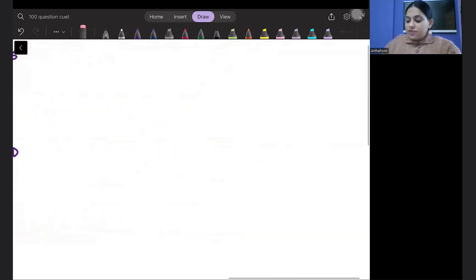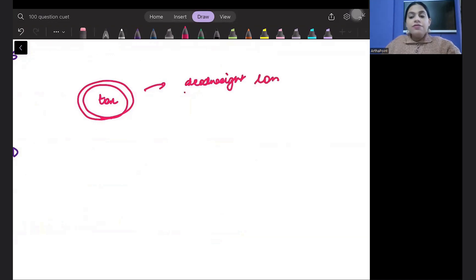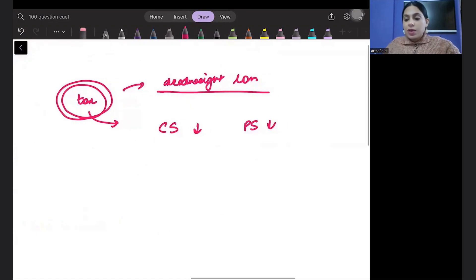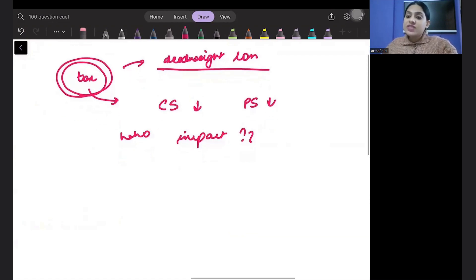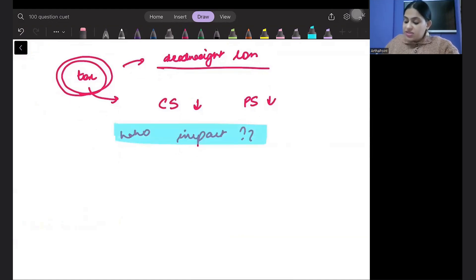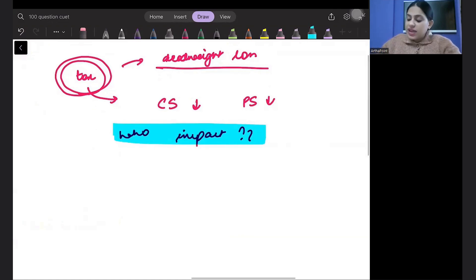So the question is, we know whenever tax is imposed, it causes deadweight loss. We know this entire concept. We know whenever tax is imposed, both consumer surplus falls and producer surplus falls. But the question is, who is impacted more? On whom does the tax have more impact? And we have studied this, that this incidence of who will face more burden of the tax will depend on elasticities.